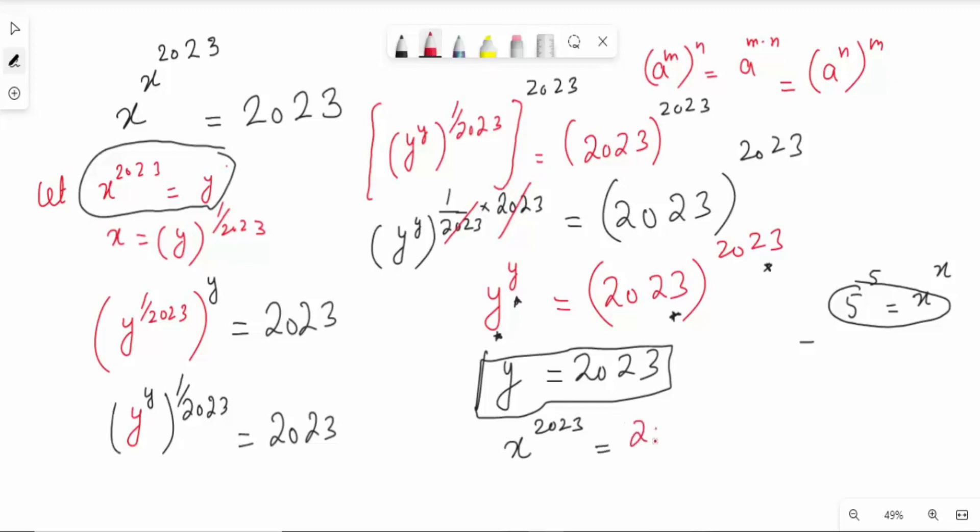Now taking both sides, take 1 over 2023 on both sides. This will be cut off,